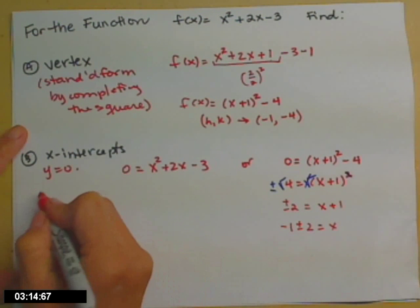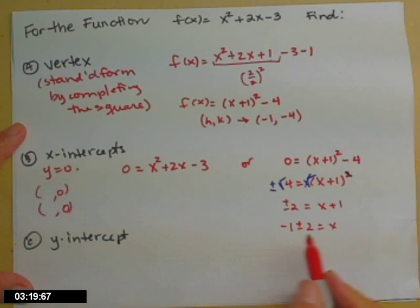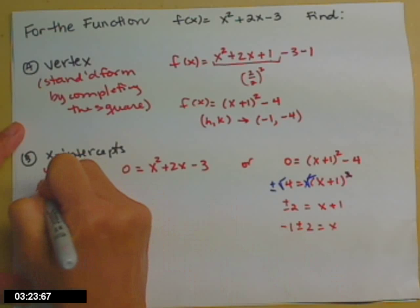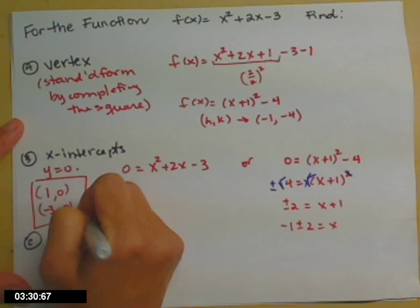So I'll go ahead and pop the answers over here. I have two of them. The y value for each is 0, y equals 0. And the two x values are negative 1 plus 2, positive 1. Negative 1 minus 2, negative 3. I now have two x-intercepts.